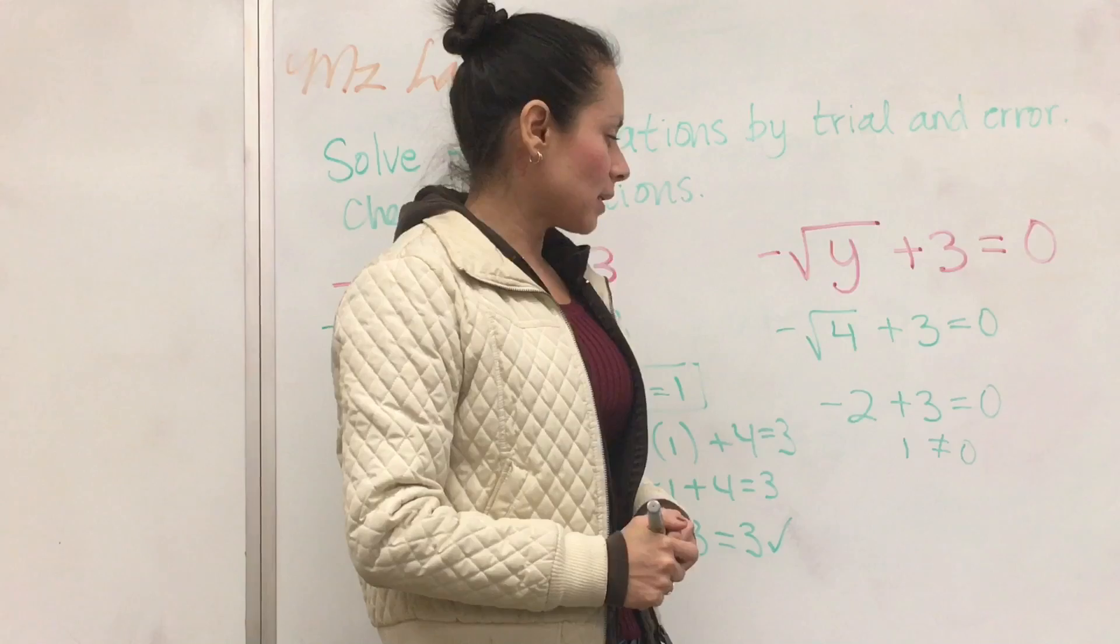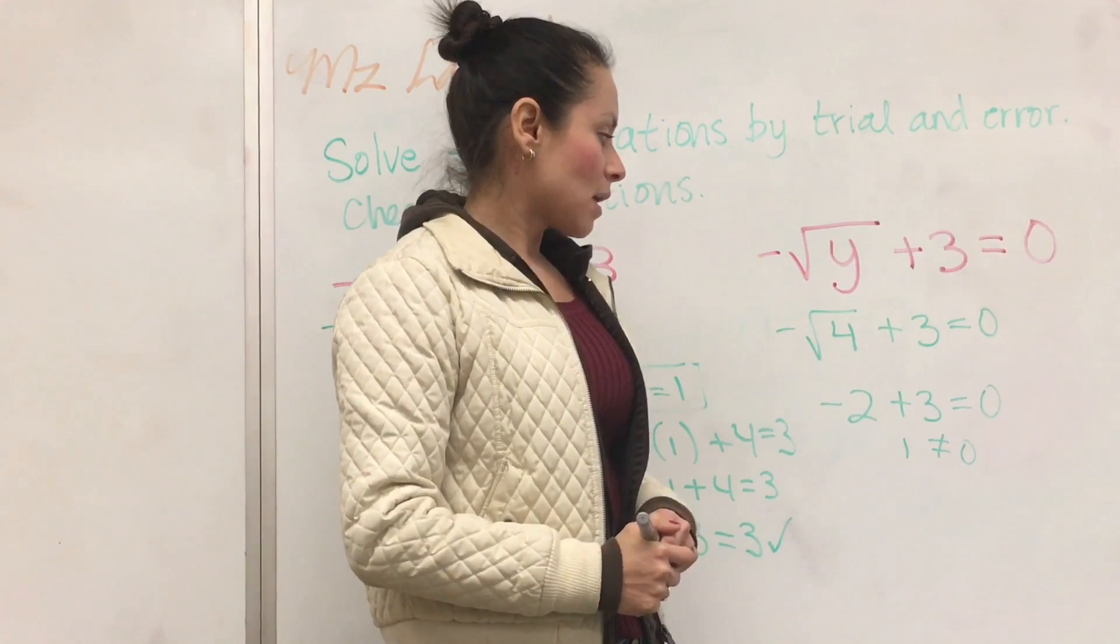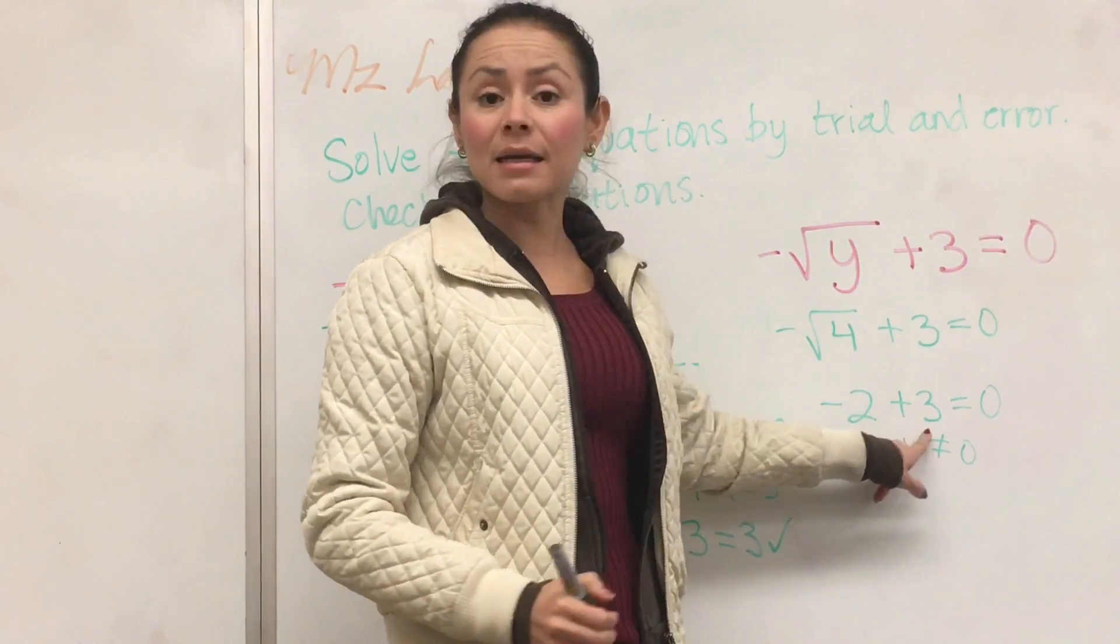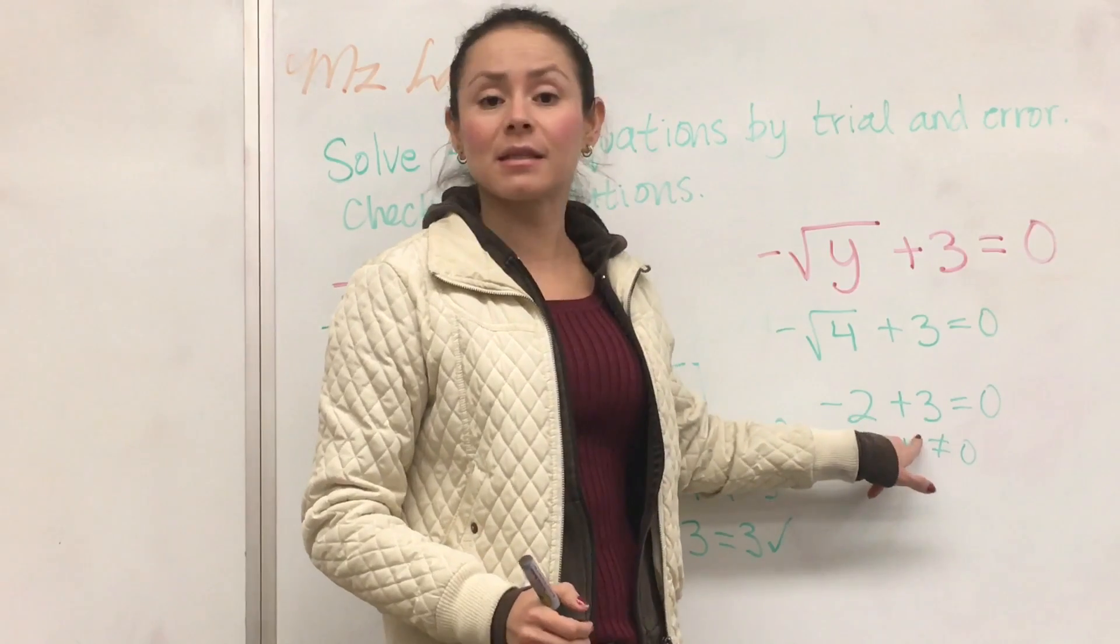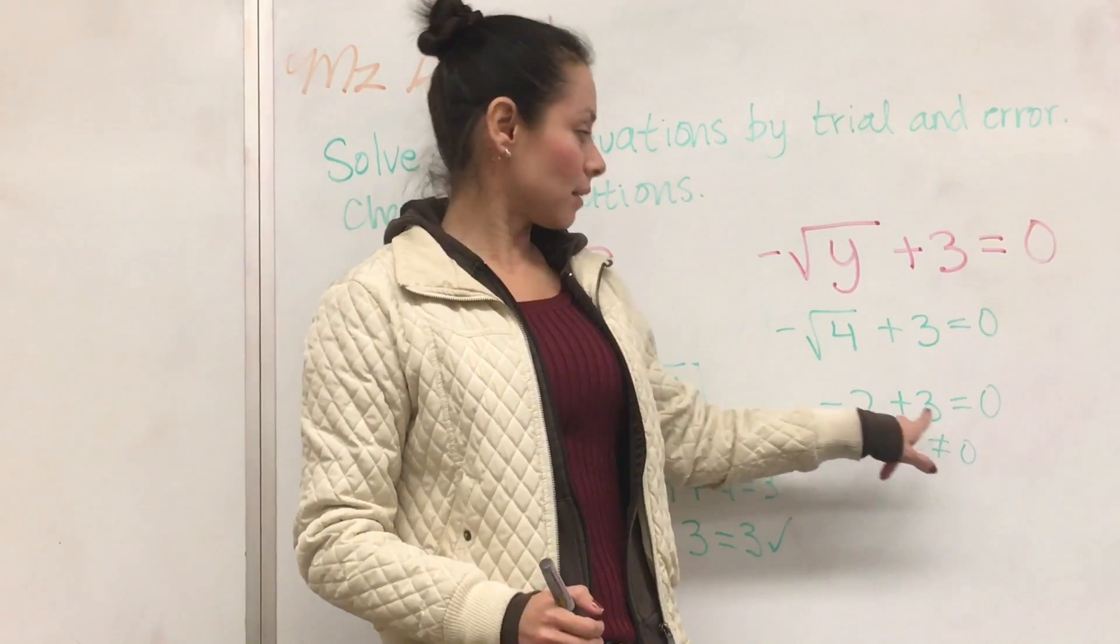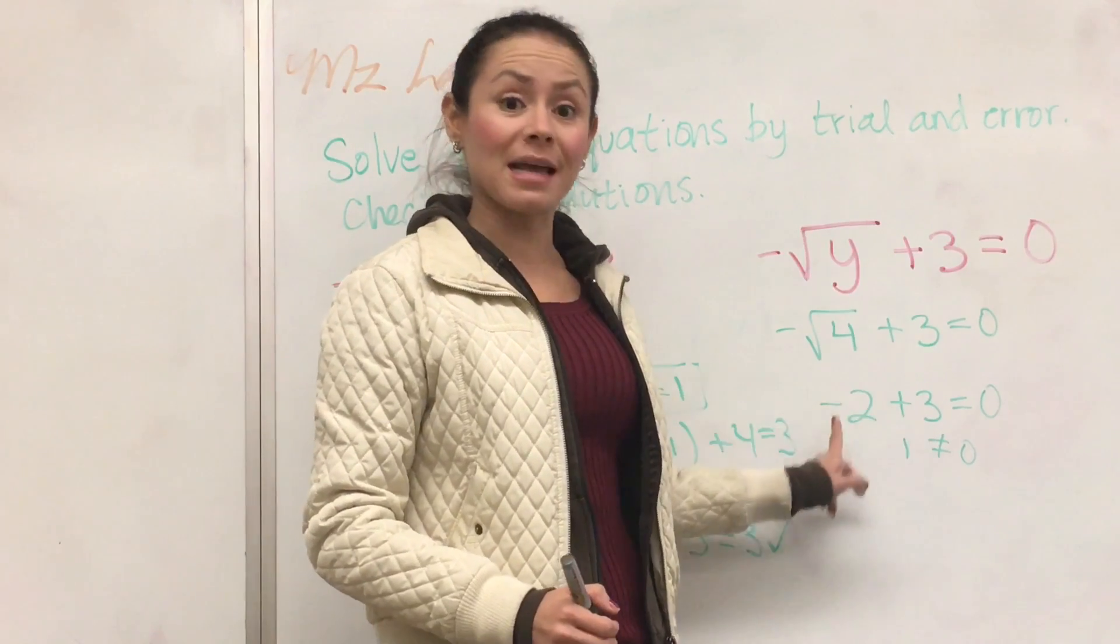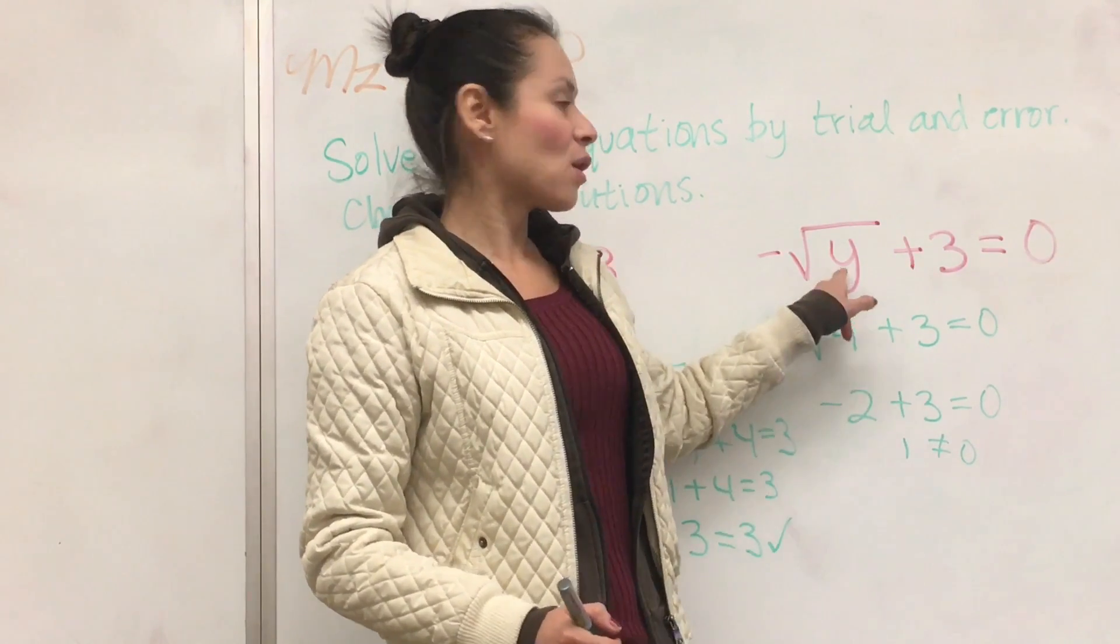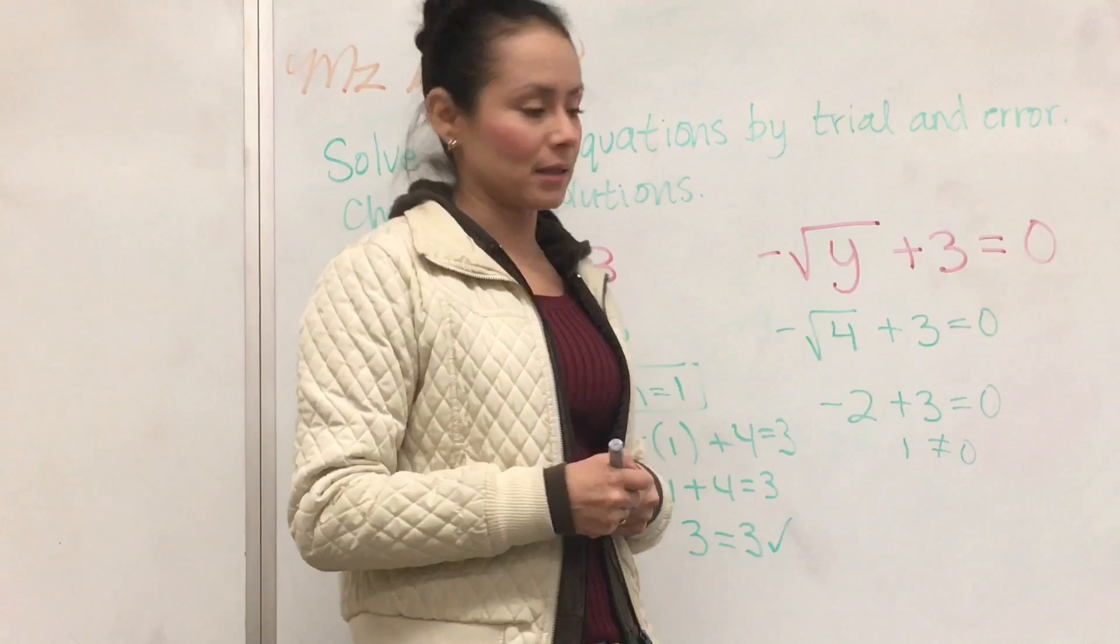So negative 2 plus 3, that's 1. And 1 does not equal 0. So it has to be something else. If we start seeing here, we need the opposite of this number to get 0. The opposite of positive 3 is negative 3. So we need a negative 3 here, which means the square root of 9. Let's try that.